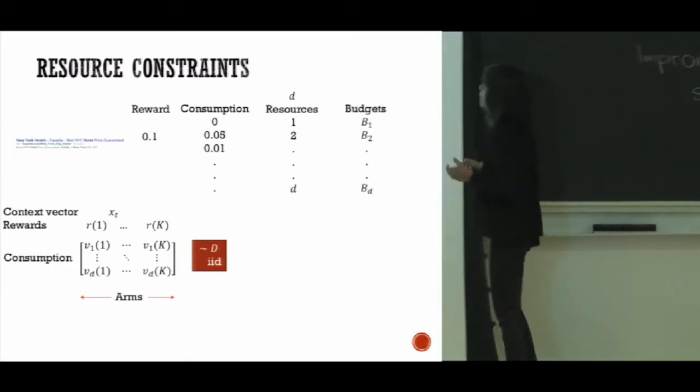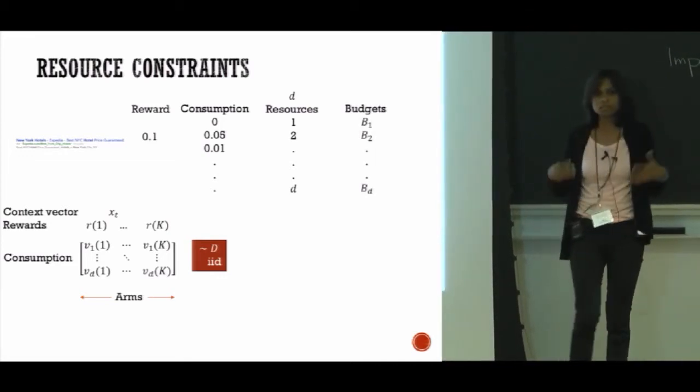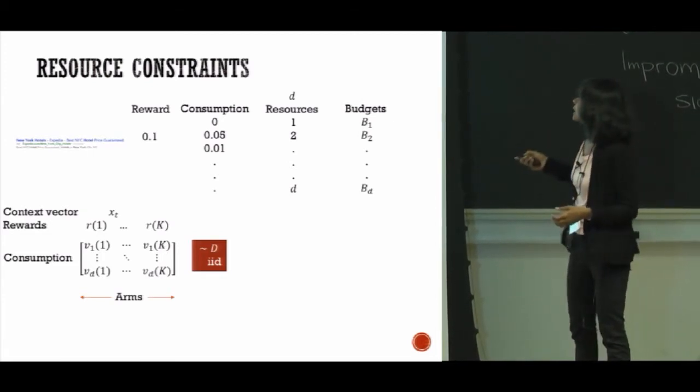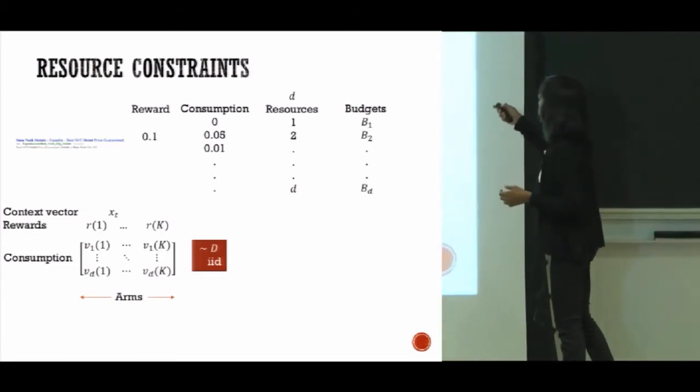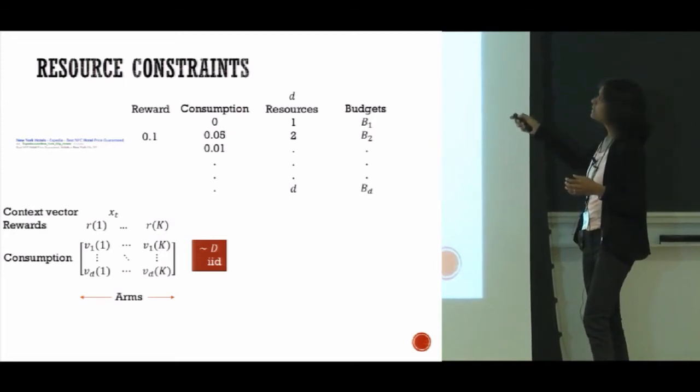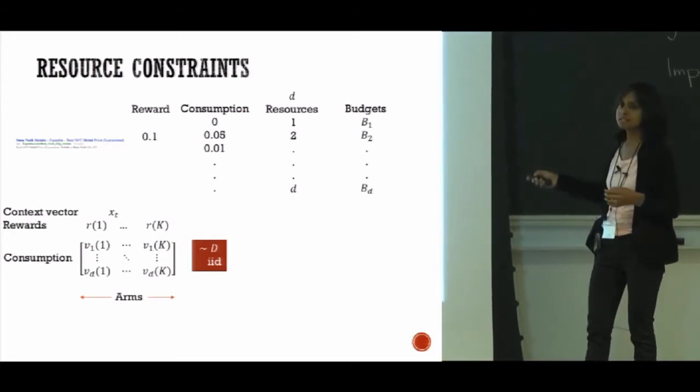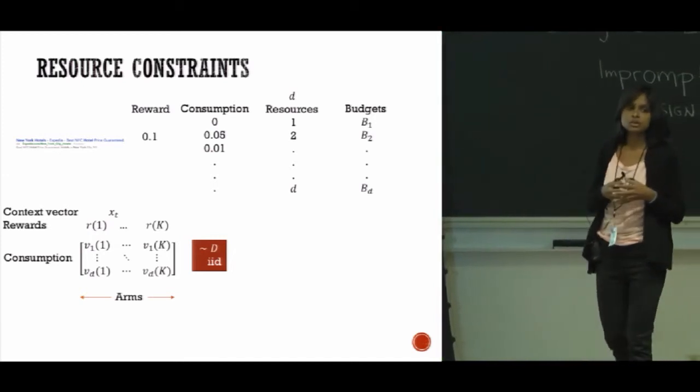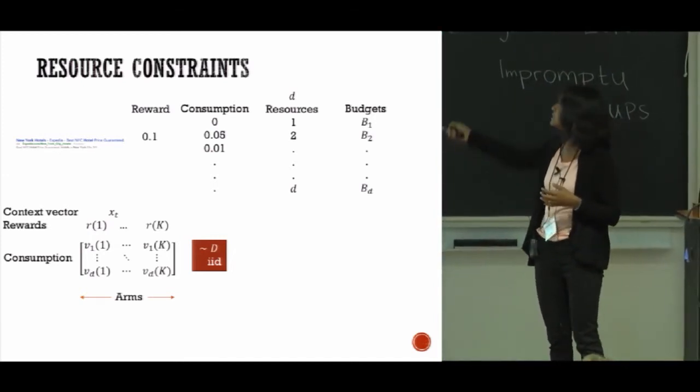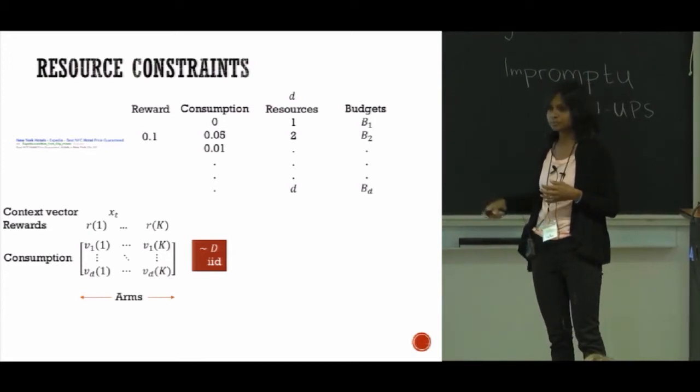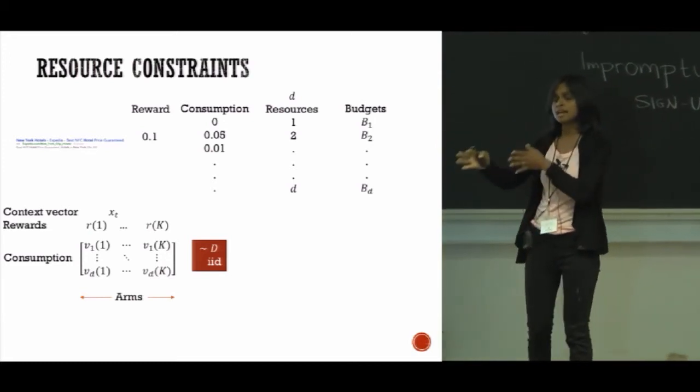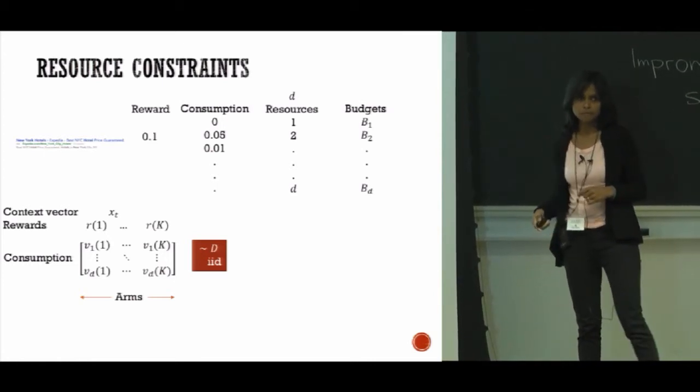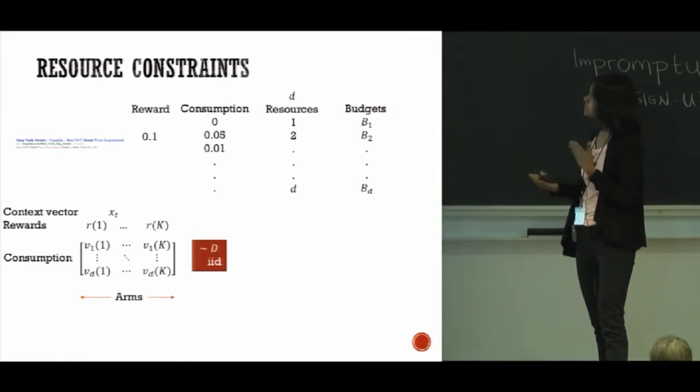The algorithm's problem now is to figure out a policy to map between context and arms so that it can maximize the total reward while ensuring that none of the consumptions exceed the given budgets. So that is the knapsack constraint—you need to ensure that total consumption in the end lies within certain budgets specified to you. The algorithm has to halt as soon as any of the budgets exceeds.